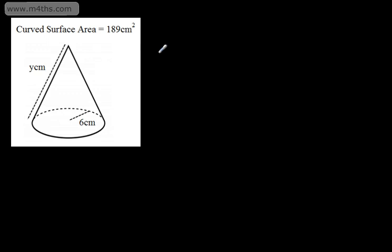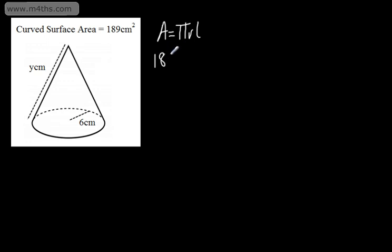On this one, the curved surface area is 189 centimeters squared. We've got a radius of 6 centimeters and a slant height of y centimeters. So all we're going to do here is find the value of y, which is the slant height. The area is equal to pi rl or pi lr — it really doesn't matter. So substituting in, 189 is equal to pi multiplied by 6, which is the radius, multiplied by y.